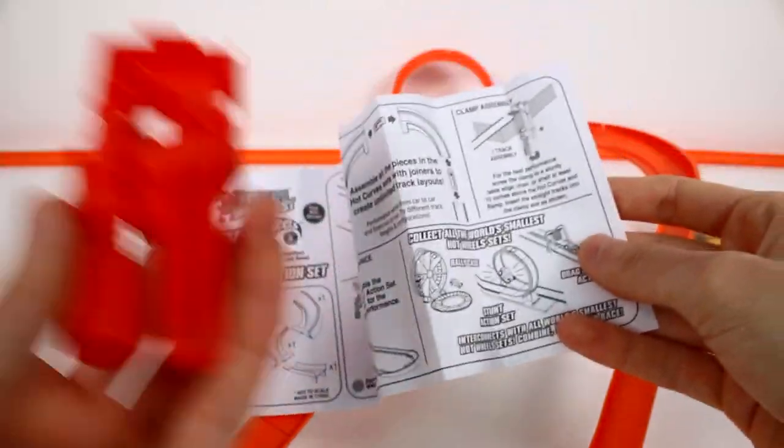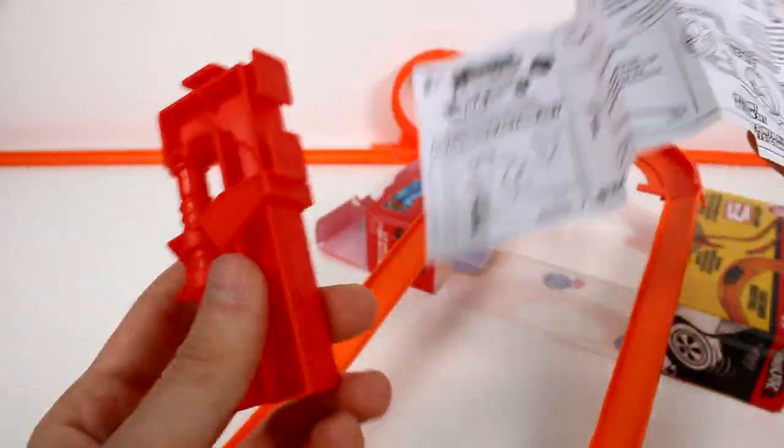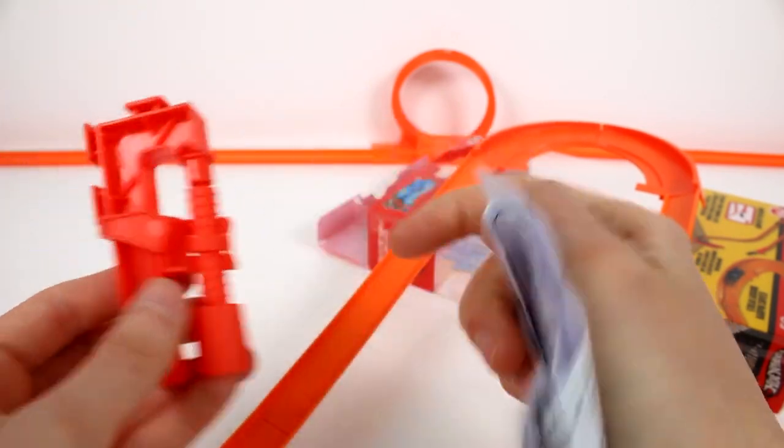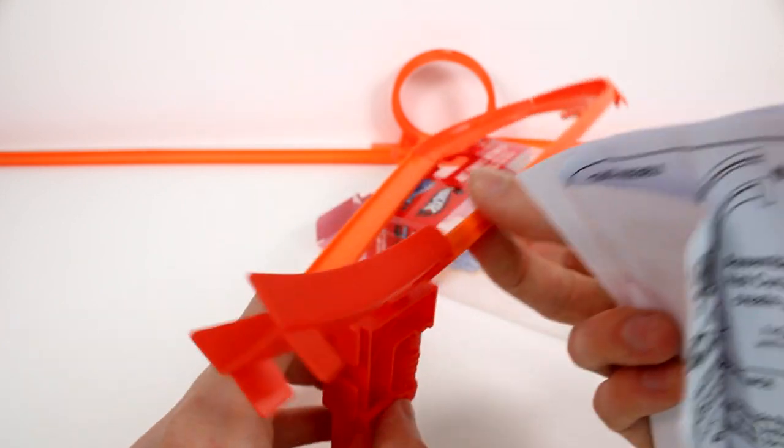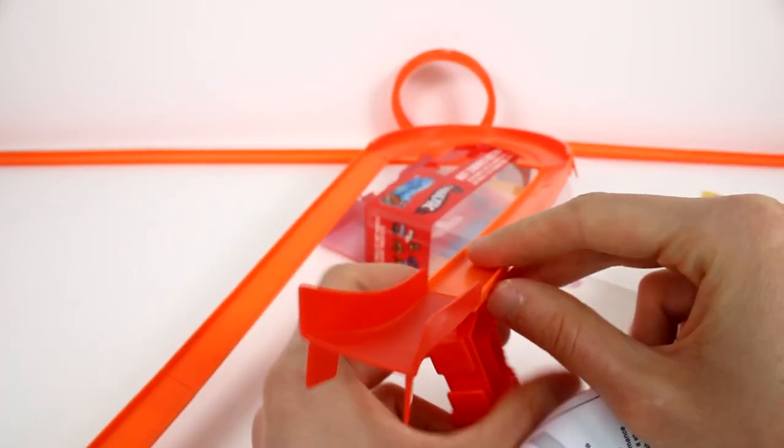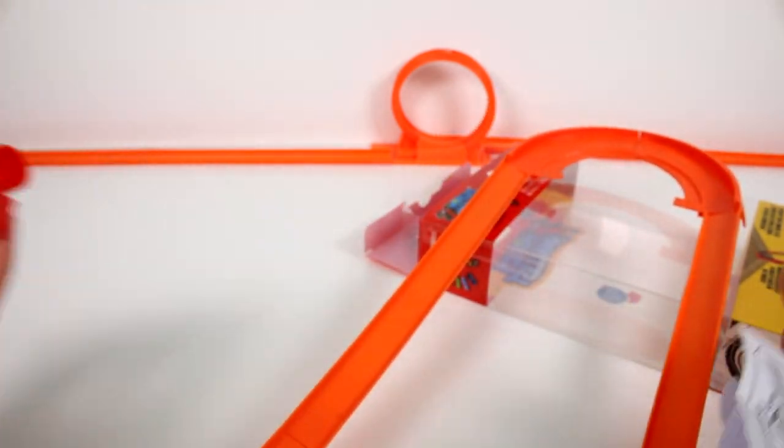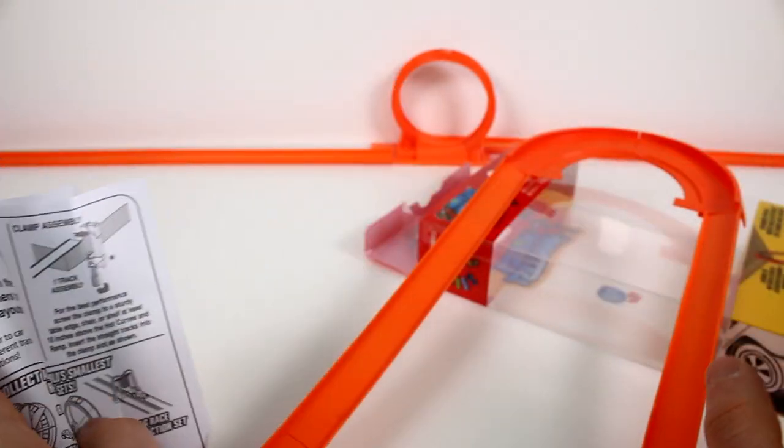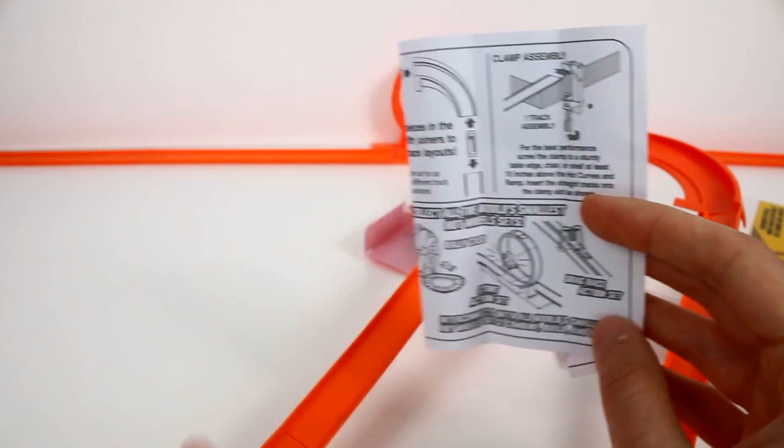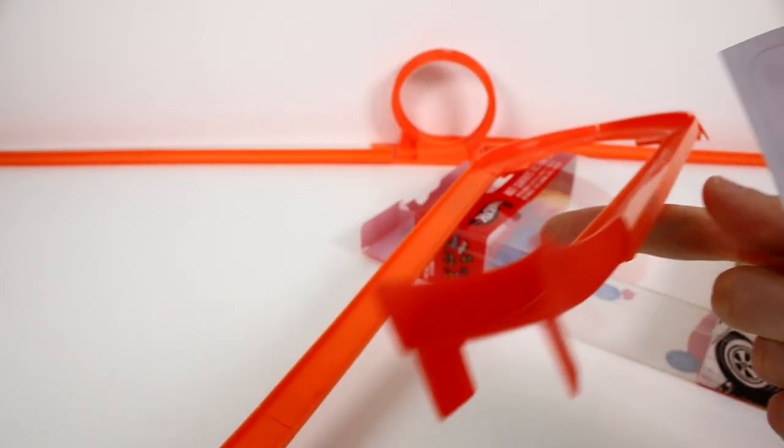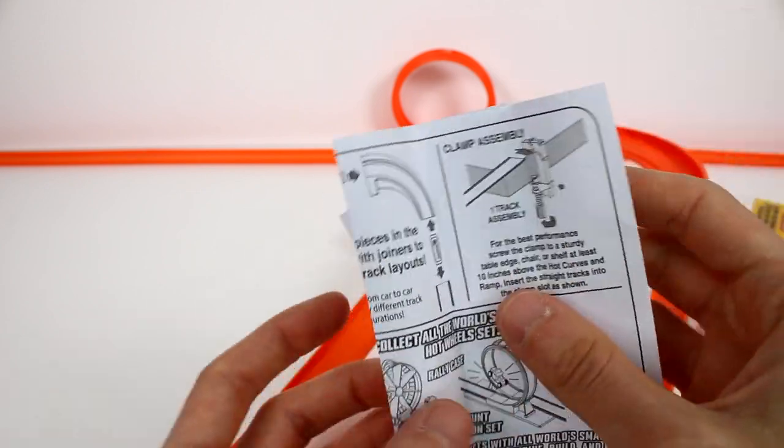Now we do get a clamp in each pack, in the track sets anyway. And you are supposed to attach your track to your table so it makes it sturdy. Or you can use it to prop your track up in the air. I haven't done that with this just because I want to keep it simple. I did attach it on one side to the table just so it stays in place a little bit. It's not attached right here but it is attached on the other end.